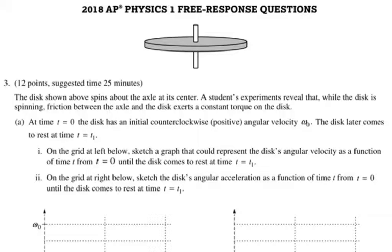The disc shown above spins about the axis at its center. A student's experiments reveal that while the disc is spinning, friction between the axle and the disc exerts a constant torque on the disc. And if you watched the lessons before that I posted earlier, the torque is the force that causes an object to move in rotational motion. At time T sub zero, the disc has an initial counterclockwise, and counterclockwise considered to be positive, angular velocity. The disc later comes to rest at point T equals T1.